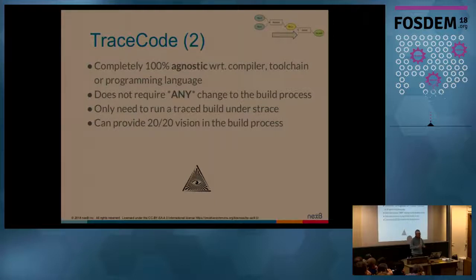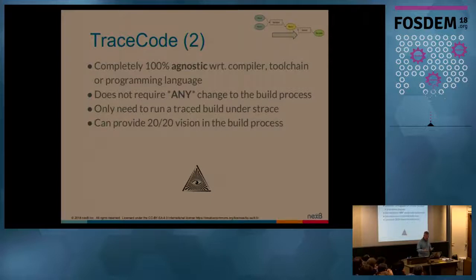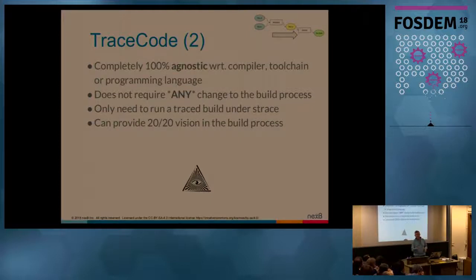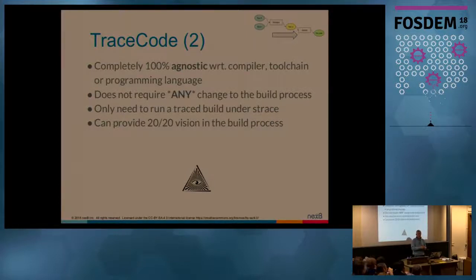The cool thing about this approach is it's completely agnostic with regards to the compiler, make tools, build chain, and programming language. It doesn't require any change to your build process. The only thing you need is to run your build under strace on Linux. There are ways to collect the same kind of system trace on Mac with dtrace and with some invocation on Windows - I've seen implementations from a Chromium testing tool using a similar approach to isolate test runs and figure out which files are used for each unit test.